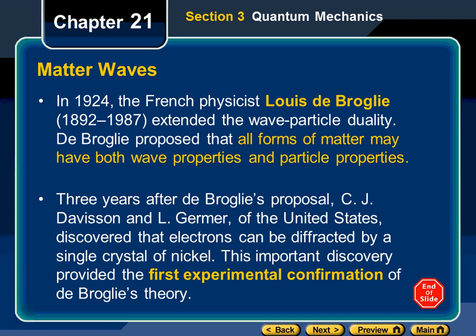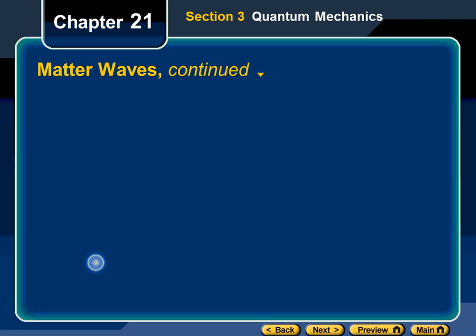This is our first experimental evidence that things we always thought were particles — like electrons — may have wave characteristics, just as de Broglie said. All forms of matter, including you, me, and the desk you're sitting on, have wave-like properties according to de Broglie.